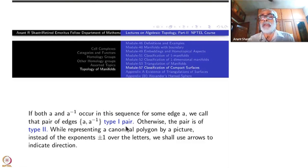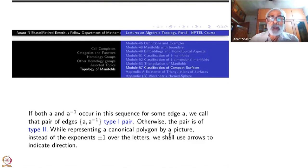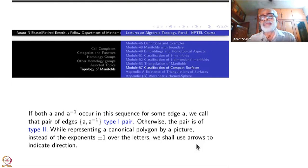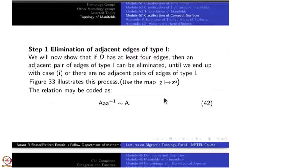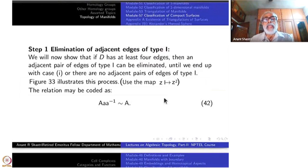While representing a canonical polygon by a picture, instead of exponents plus or minus one over the letter, we shall use arrows, because arrows are easier to indicate direction. When you draw a picture, it is letters and arrows. The first step is elimination of edges of type one which are consecutive. We will now show that if D has at least four edges, then an adjacent pair of type one can be eliminated.